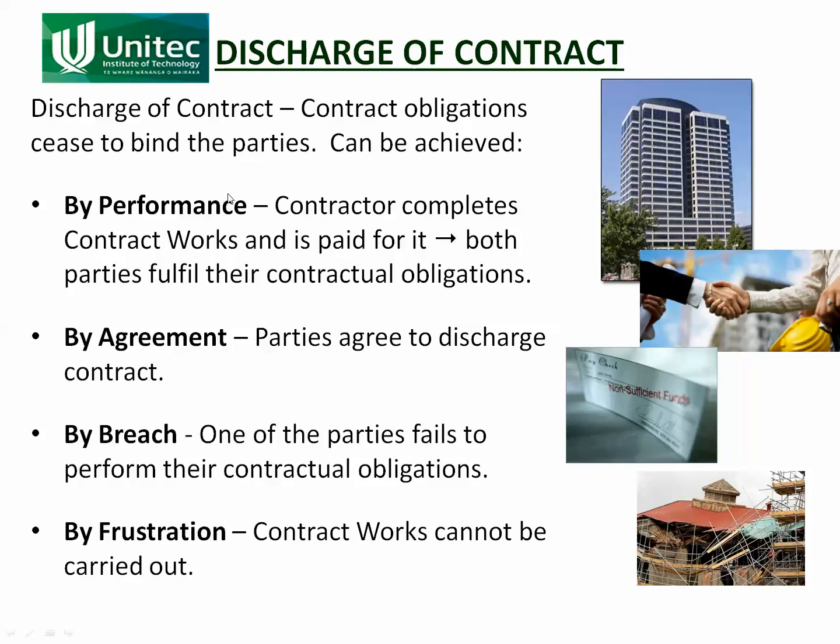There are several ways that a contract can be discharged or ended. The first is by performance — in other words the contractor builds what he's supposed to build and the client pays him for it. This is the way it's supposed to finish and this is the way most contracts do finish.